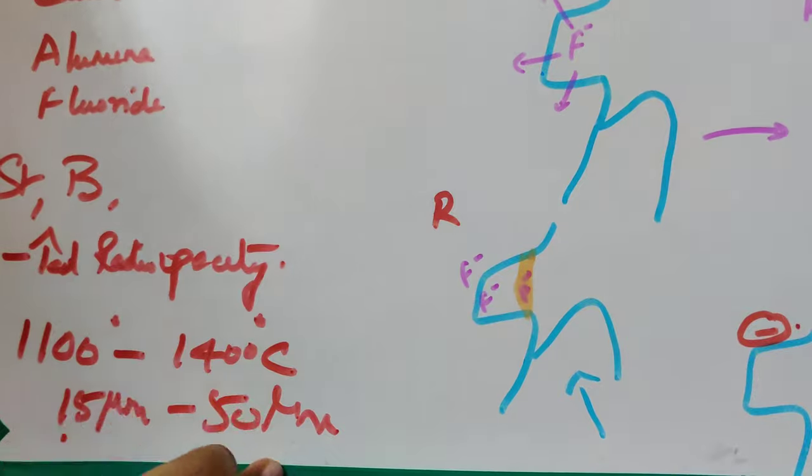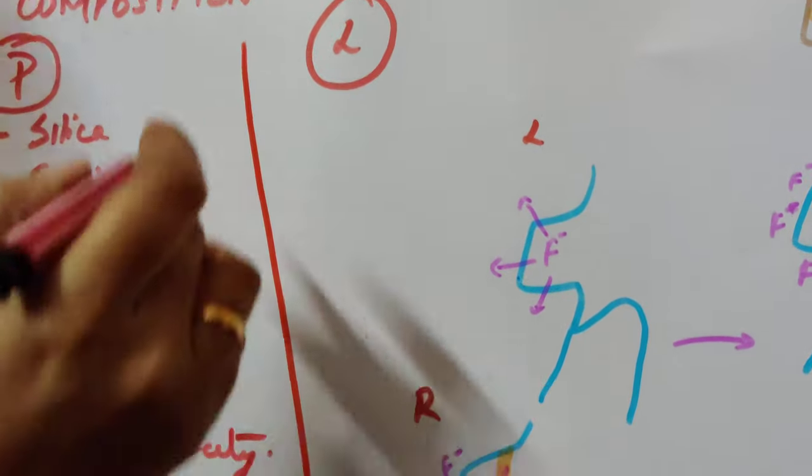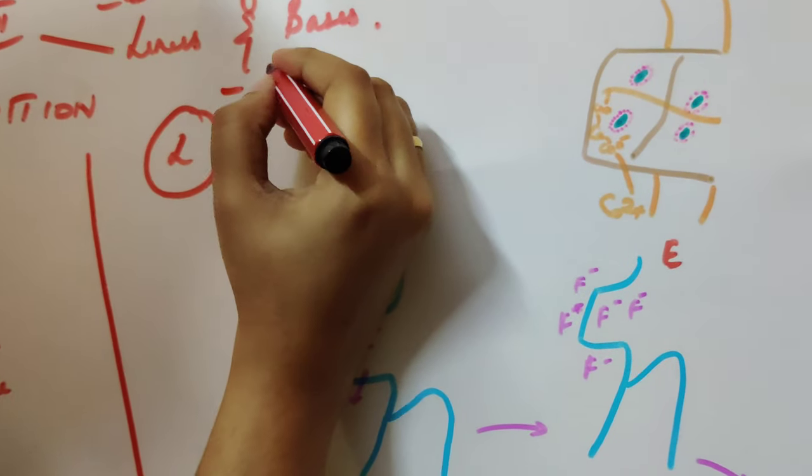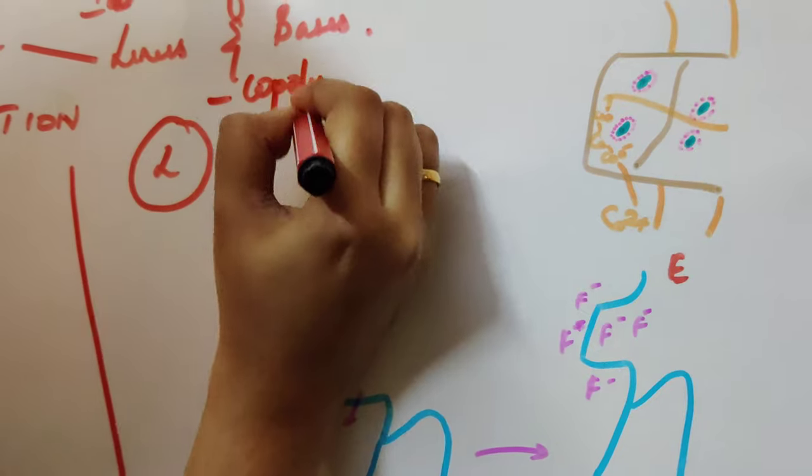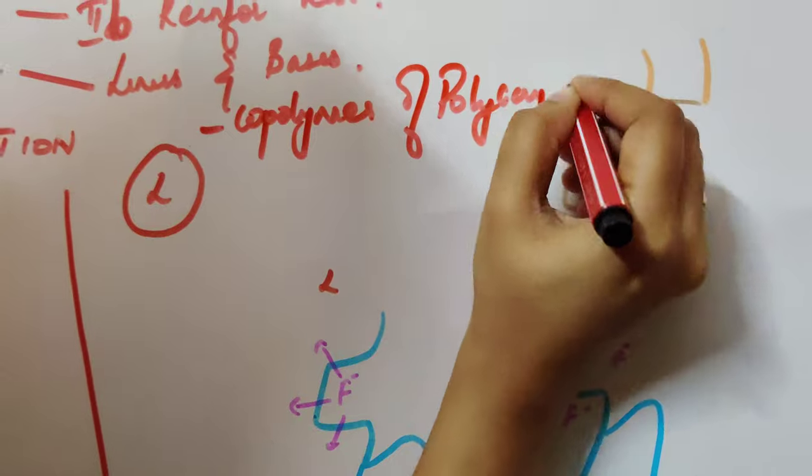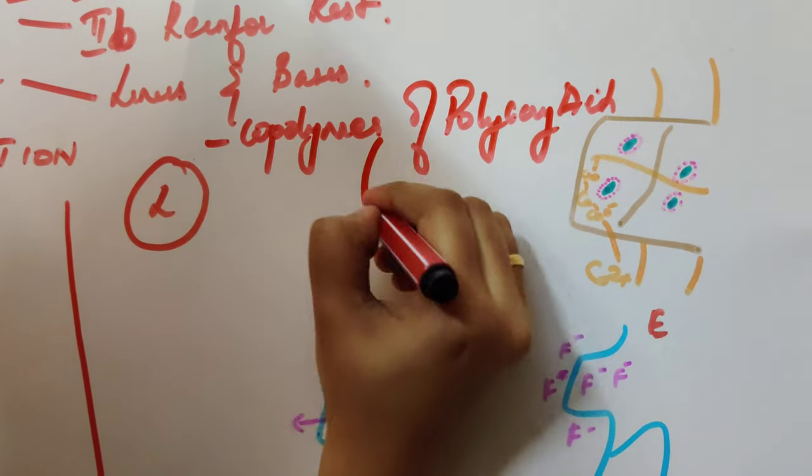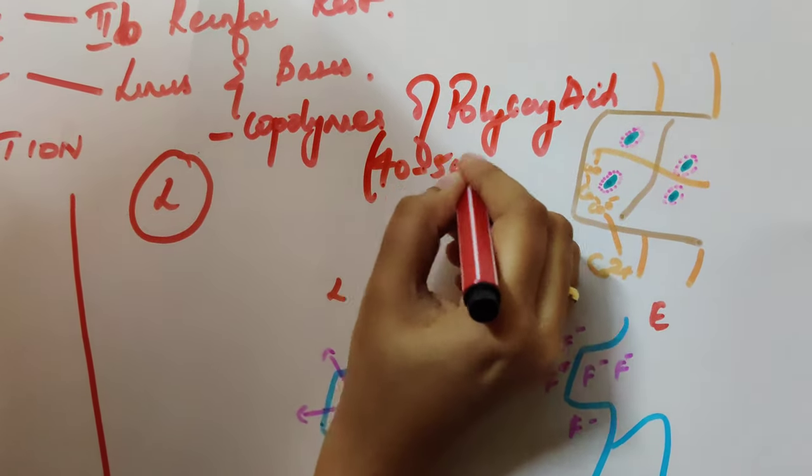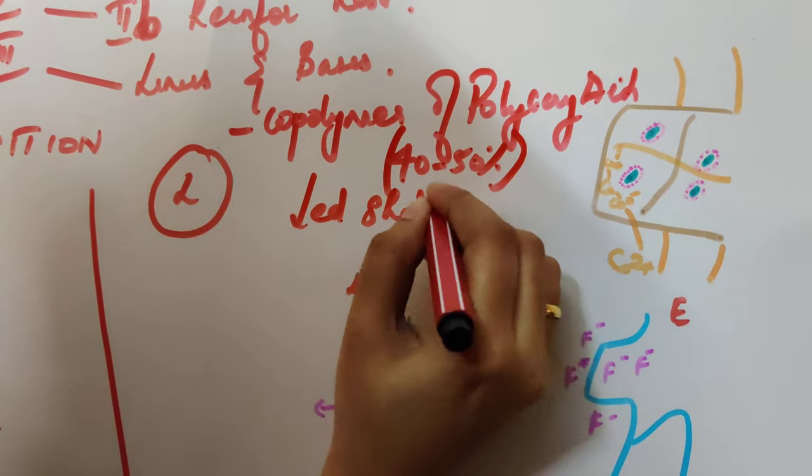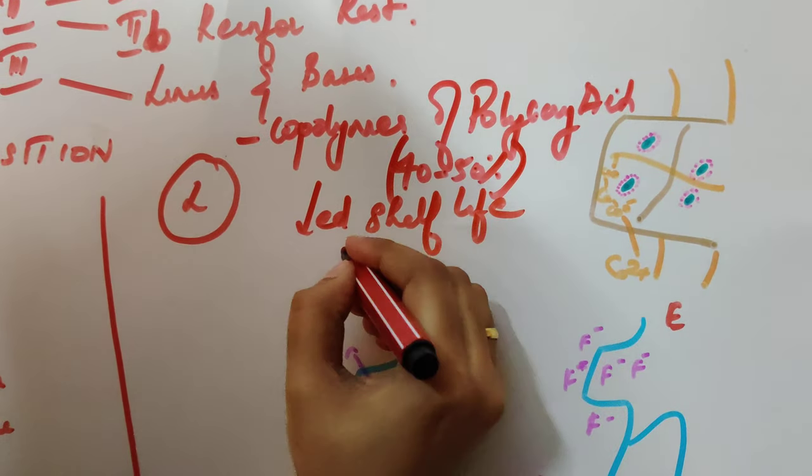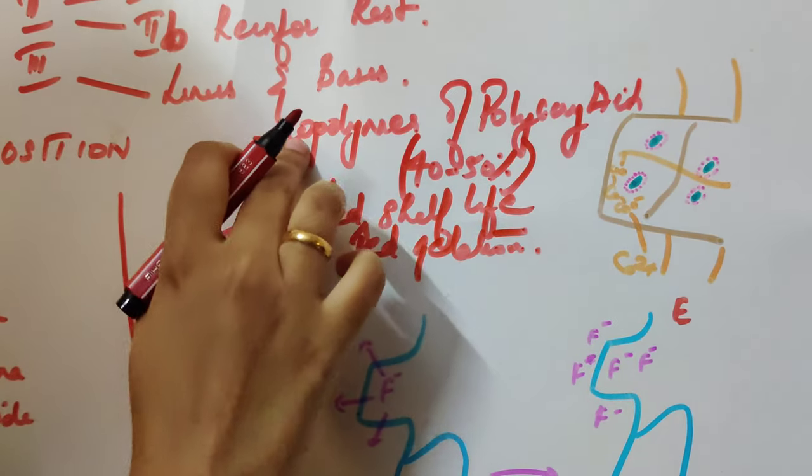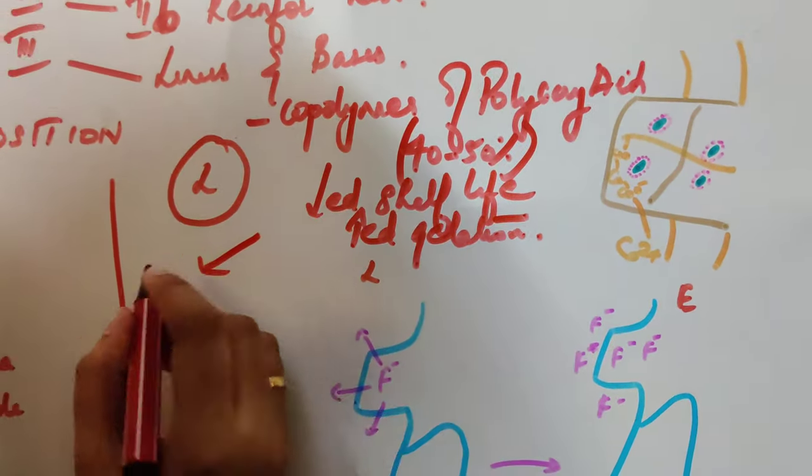Next let's see about the liquid composition. If you see earlier, we used copolymer of polyacrylic acid to a range of 40 to 50 percent. But then owing to the decreased shelf life and increased gelation property, this copolymer of polyacrylic acid was then replaced.